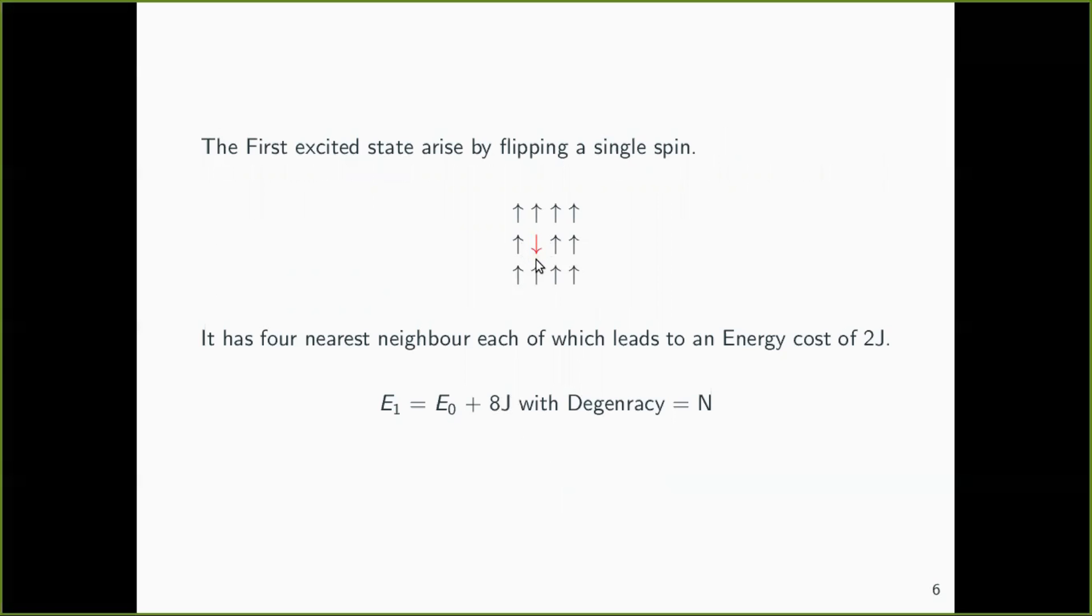So we know that Ising model depends on the manner of the occupation of the neighboring sites. If it is down, it will cost an energy of 2J and it has four neighboring sites so it will cost an energy of 8J. So E1 will come out to be E0 plus 8J and it has a degeneracy of N.